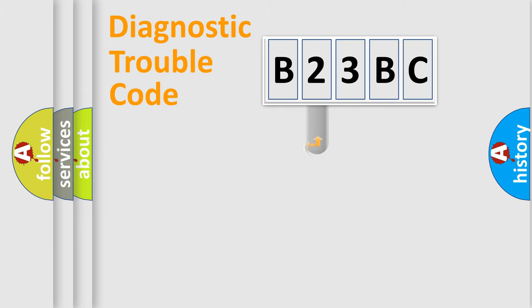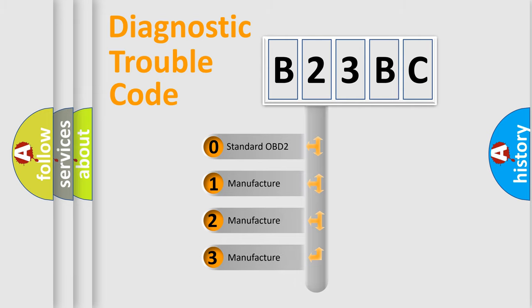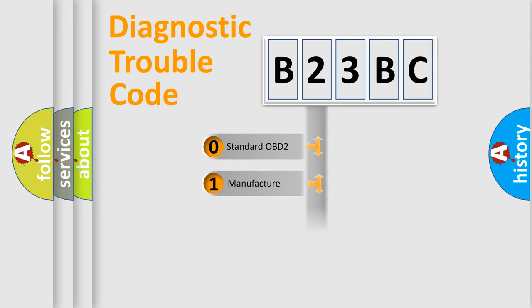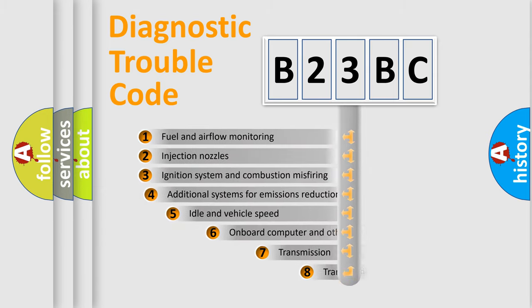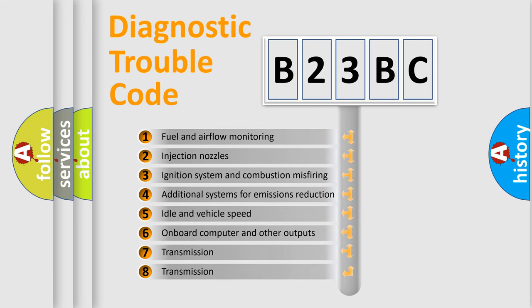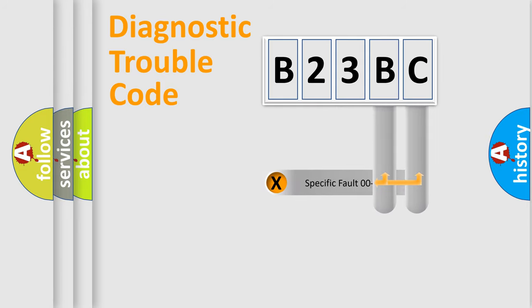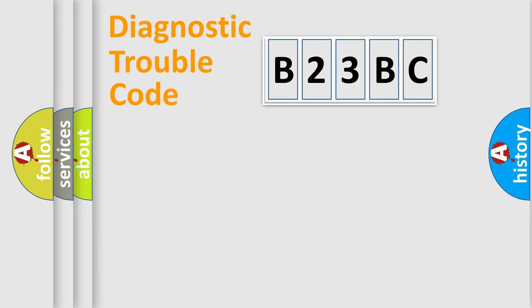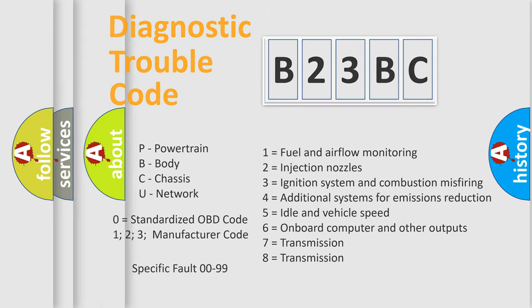This distribution is defined in the first character of the code. If the second character is expressed as zero, it is a standardized error. In the case of numbers 1, 2, or 3, it is a manufacturer-specific error. The third character specifies a subset of errors. This distribution is valid only for standardized DTC codes, and the last two characters define the specific fault of the group.